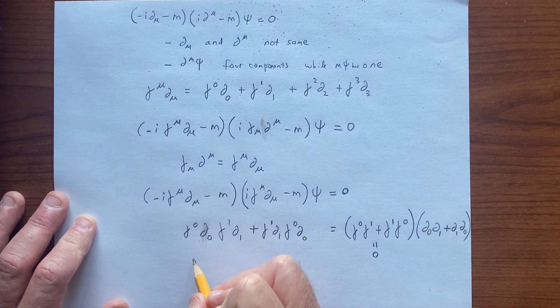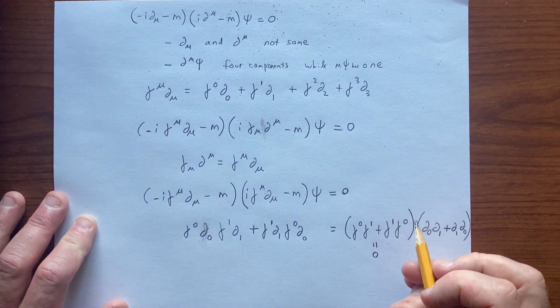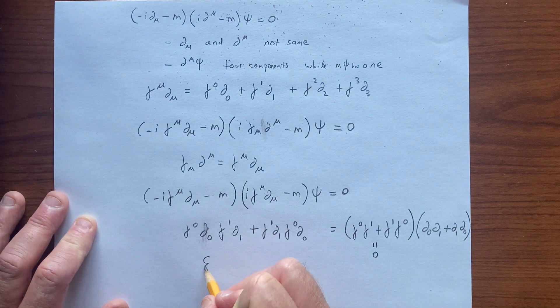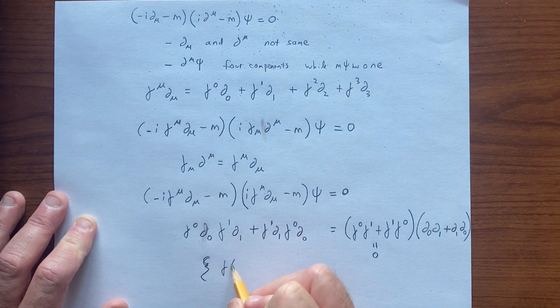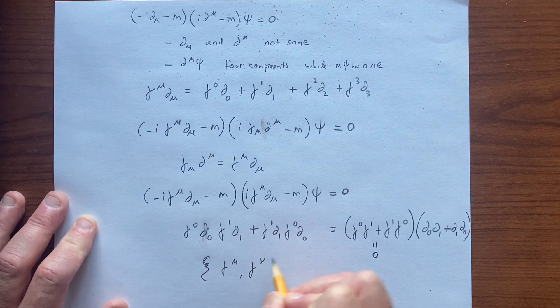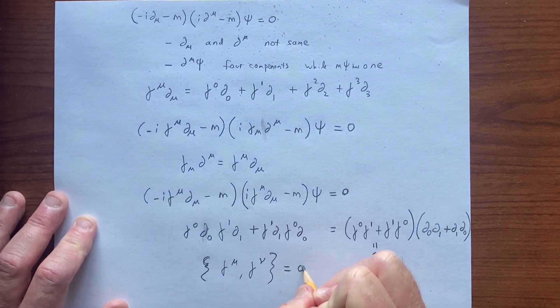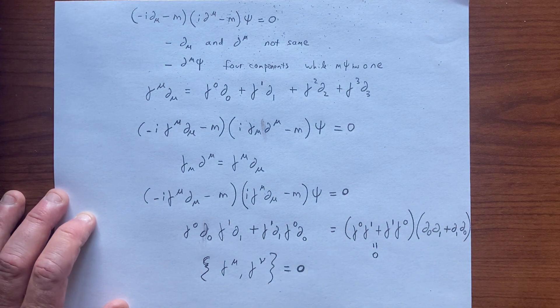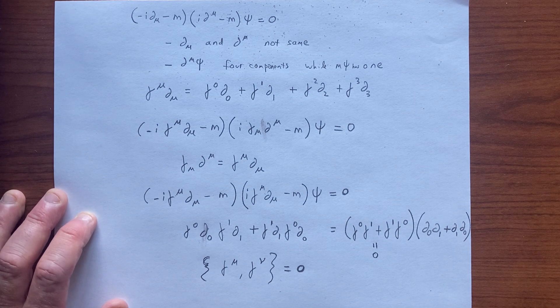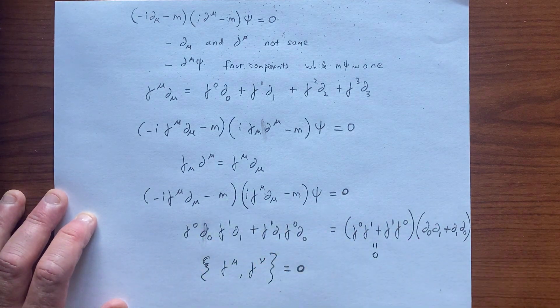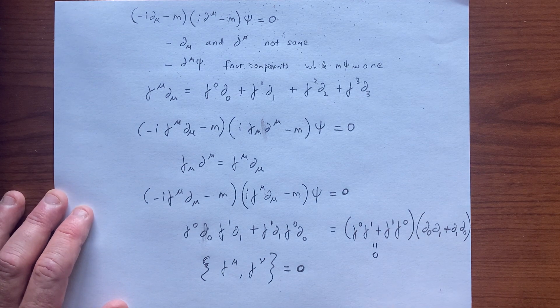So we want this thing to be zero, and so more generally this means that gamma^mu gamma^nu—that's the condition: they anti-commute. So these objects need to obey this rule.